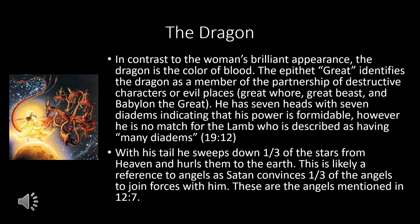Even though we saw the beast briefly in chapter 11, we have a more formal introduction here. In contrast to the woman's brilliant appearance, the dragon is the color of blood. The epithet 'great' identifies the dragon as a member of the partnership of destructive characters — we're going to see the great whore, the great beast, and Babylon the great. He has seven heads with seven diadems, indicating formidable power, but he's no match for the Lamb, who is described as having many diadems in chapter 19. With his tail, he sweeps down a third of the stars from heaven — this is likely a reference to angels, as Satan convinces a third of the angels to join forces with him. Those angels would now be called demons.